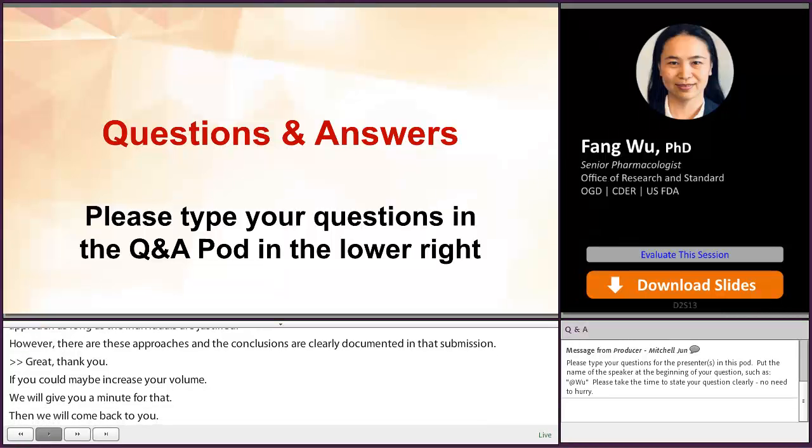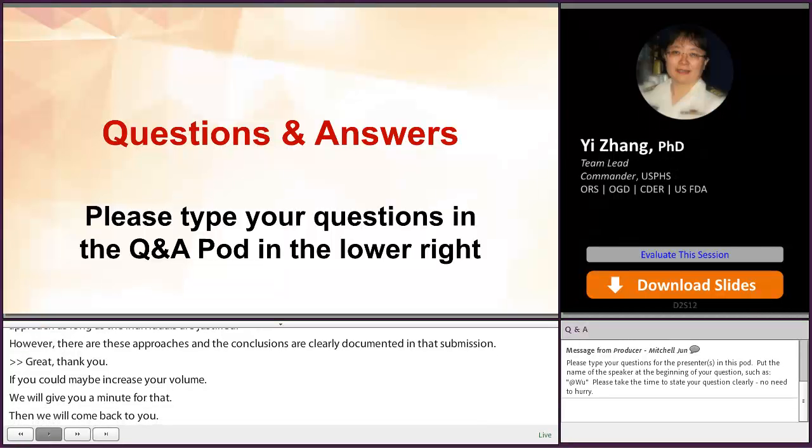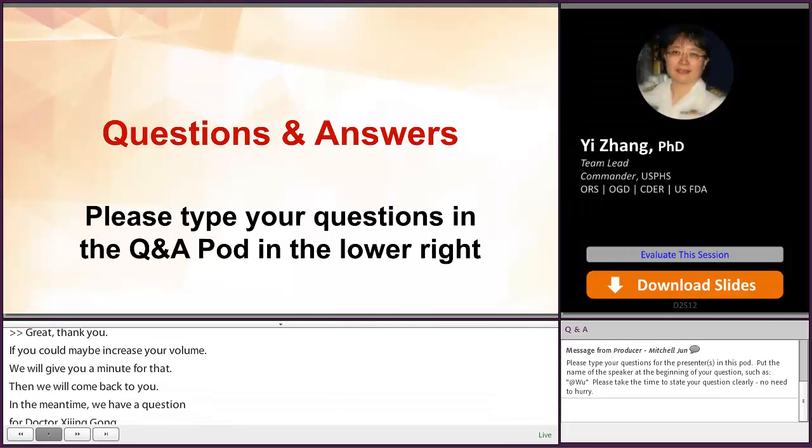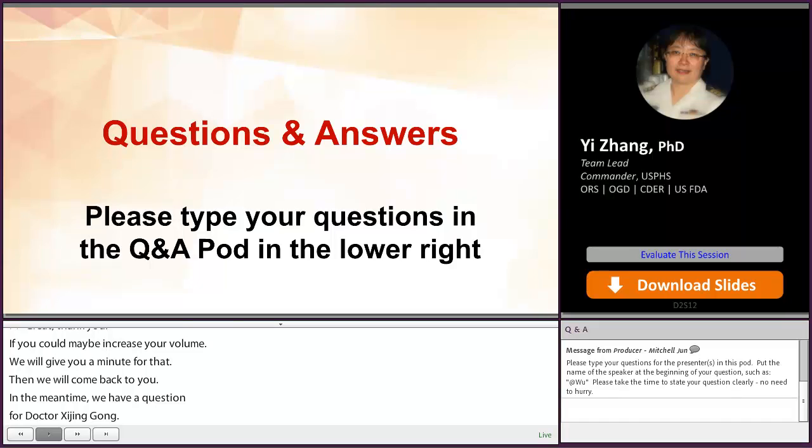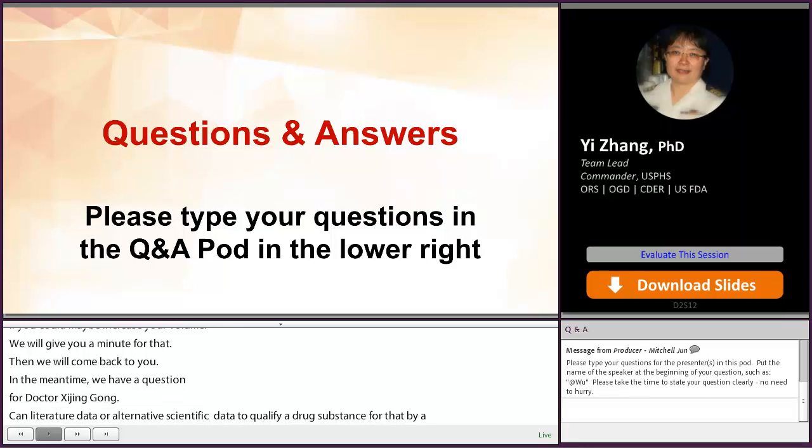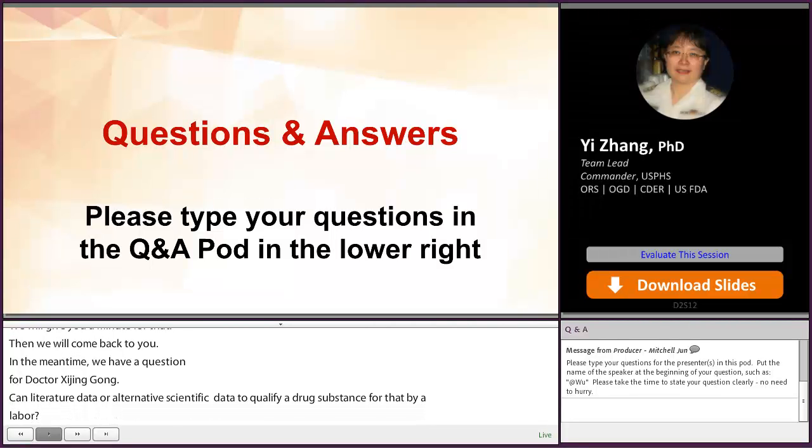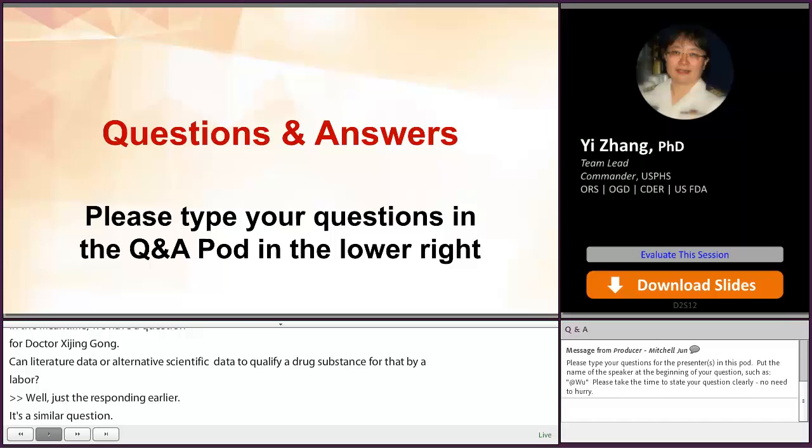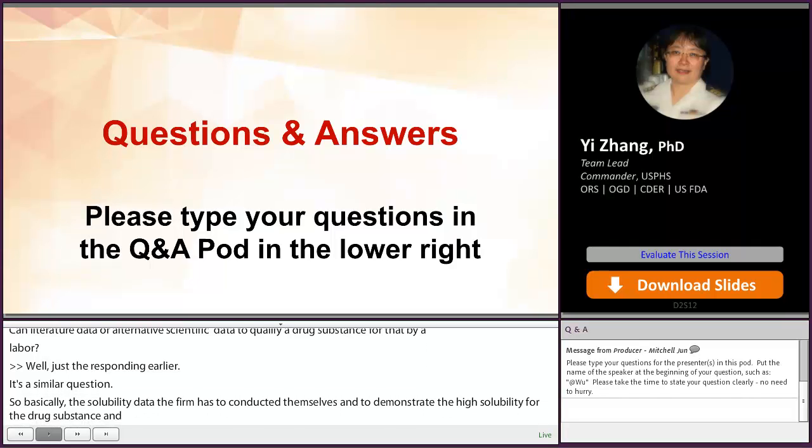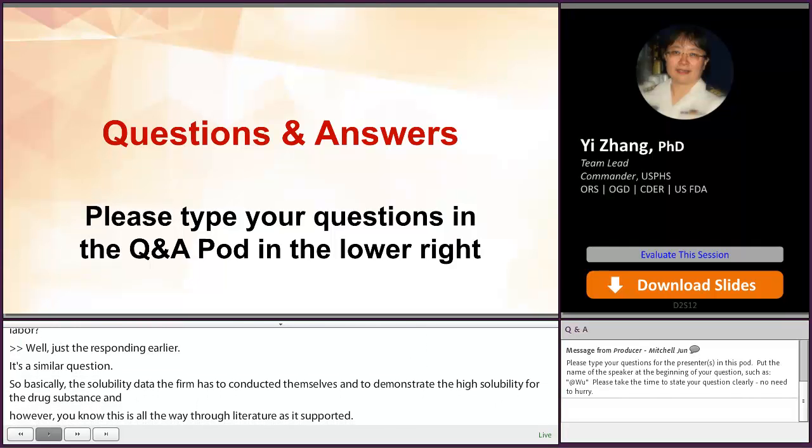Can literature data or alternative scientific justification of solubility be used as pivotal data to qualify a drug substance for BCS3-based biowaiver? As I just responded earlier, it's a similar question. So basically, solubility data the firm has to conduct themselves to demonstrate the high solubility for the drug substance. And however, I mean, the firm always can submit literature as supportive, but it can't be served as pivotal. So the solubility data that has to serve as pivotal have to be conducted by the firm itself.